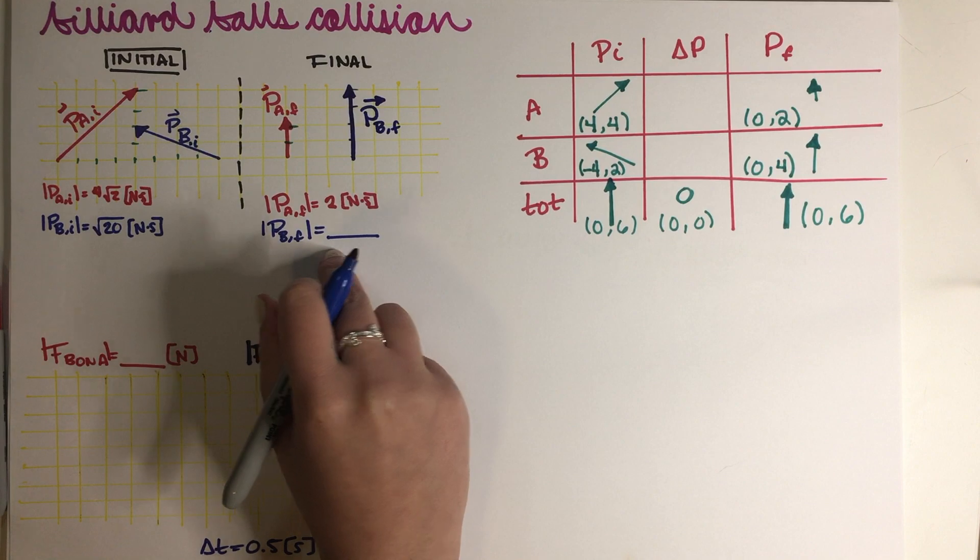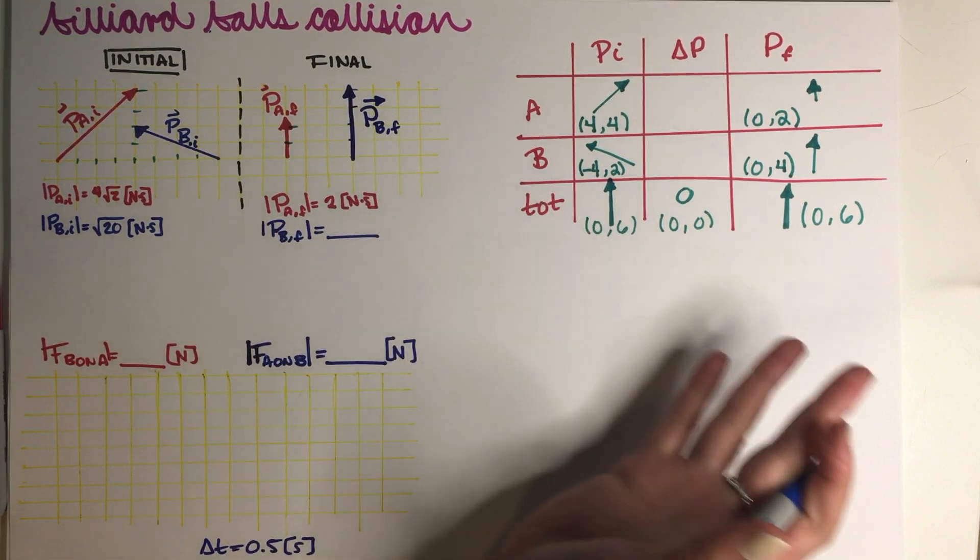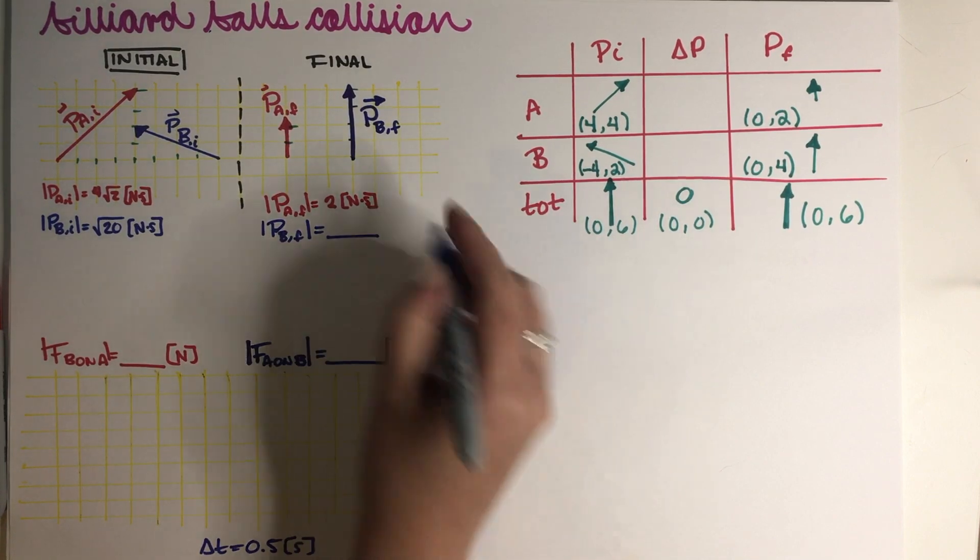And then in terms of magnitude, because this vector is all just going up, that means that if I use Pythagorean theorem, 4 square root, that's just going to be 4, right?